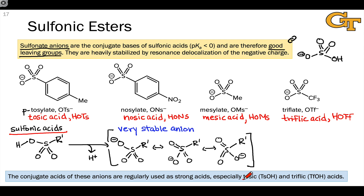In particular, tosic acid, which is relatively cheap and abundant, and triflic acid, which is used primarily because of its strength, commonly show up in organic reactions.